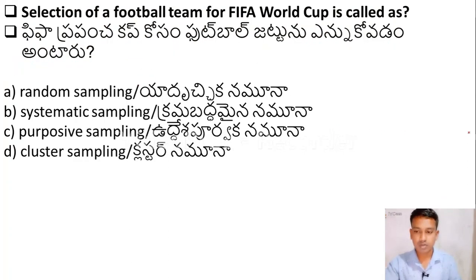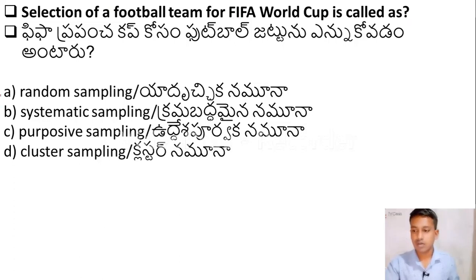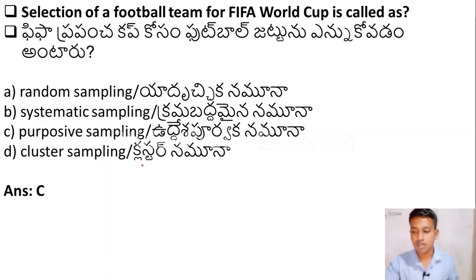The next question: selection of a football team for the FIFA World Cup is called — Option A: Random sampling, Option B: Systematic sampling, Option C: Purposive sampling, Option D: Cluster sampling. The right answer is Option C — Purposive sampling.